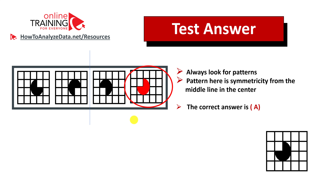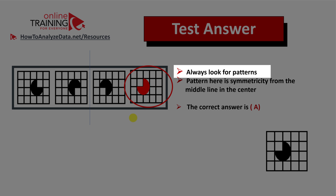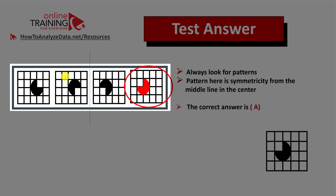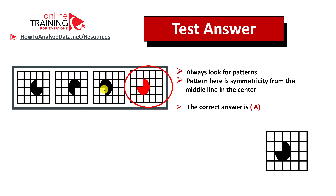As usual, my advice is always the same — always look for patterns. Here the pattern is symmetricity. If we draw a line in the middle, you can see that the pie pieces are symmetrical. The pie in the first square mirrors the pie in the last square, because the pies in the second and third squares are also mirrored. Hopefully you've nailed this question and now know how to answer similar problems in the test.